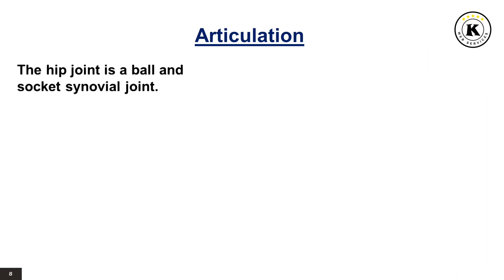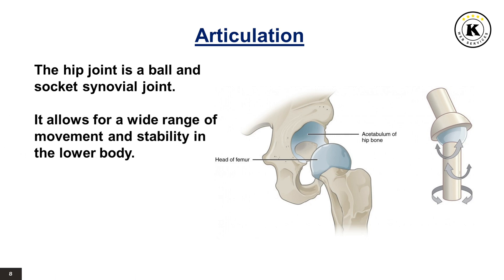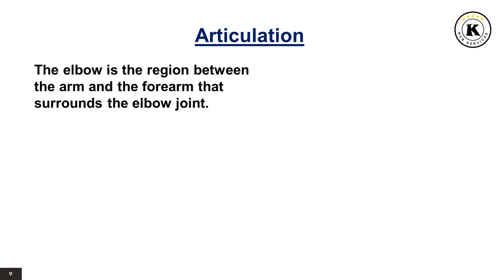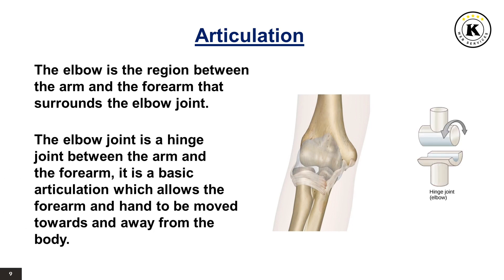Articulation. The hip joint is a ball and socket synovial joint formed by the articulation of the rounded head of the femur and the cup-like acetabulum of the pelvis. It allows for a wide range of movement and stability in the lower body. Both joint surfaces are covered with a strong but lubricated layer called articular hyaline cartilage. The elbow is a hinged joint between the arm and the forearm, which allows the forearm and hand to be moved towards and away from the body. The elbow joint has three different portions surrounded by a common joint capsule, involving the humerus of the upper arm and the radius and ulna of the forearm.